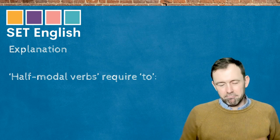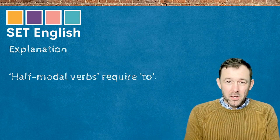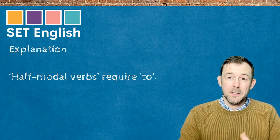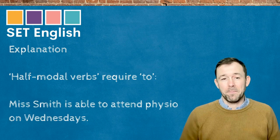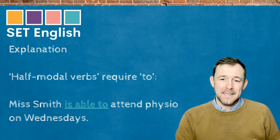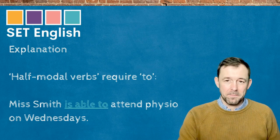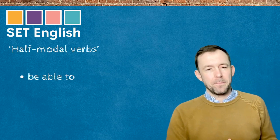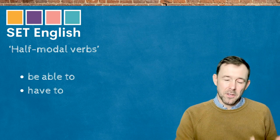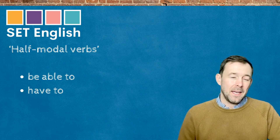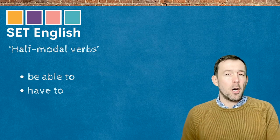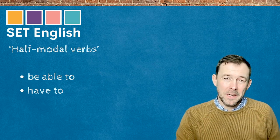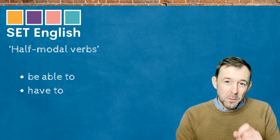So why? Well, the reason is because those half modal verbs that I showed you earlier — they require 'to.' Have a look at them again. Mrs. Smith is able to attend physio on Wednesdays. So half modal verbs: 'be able to' and 'have to.' 'Be able to' deals with ability and 'have to' deals with obligation. Notice that at the end of both of those, we've got 'to.'